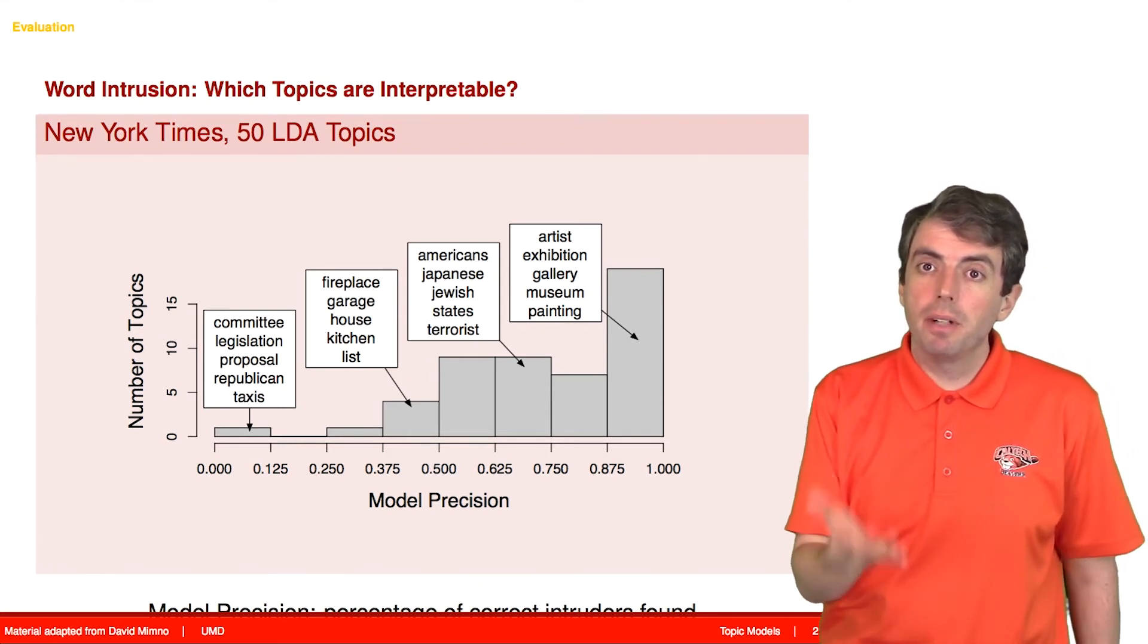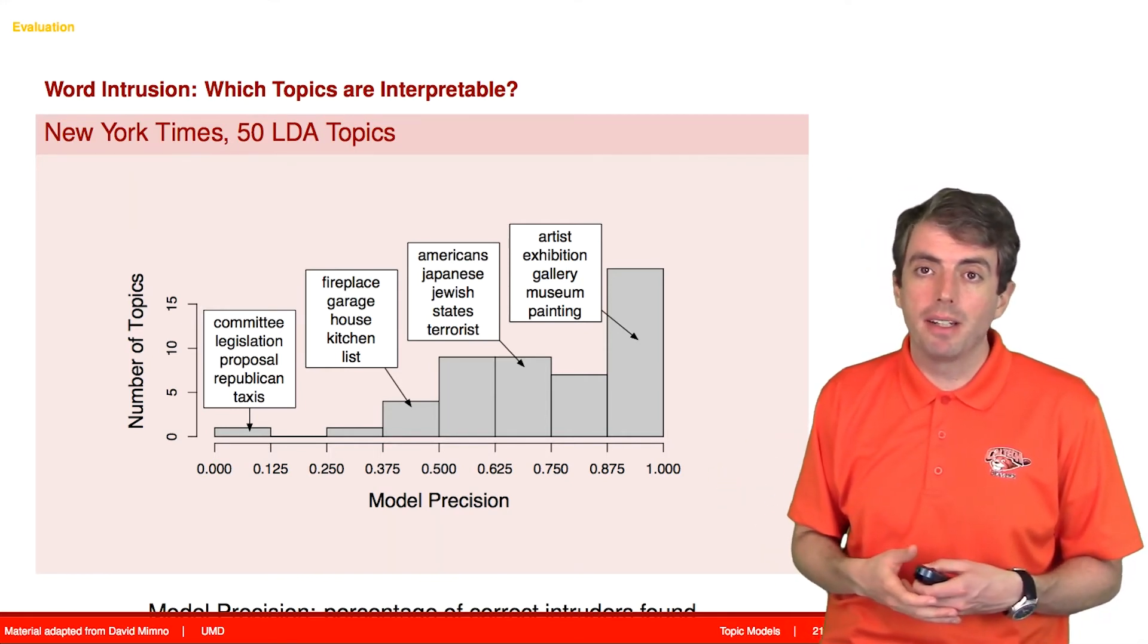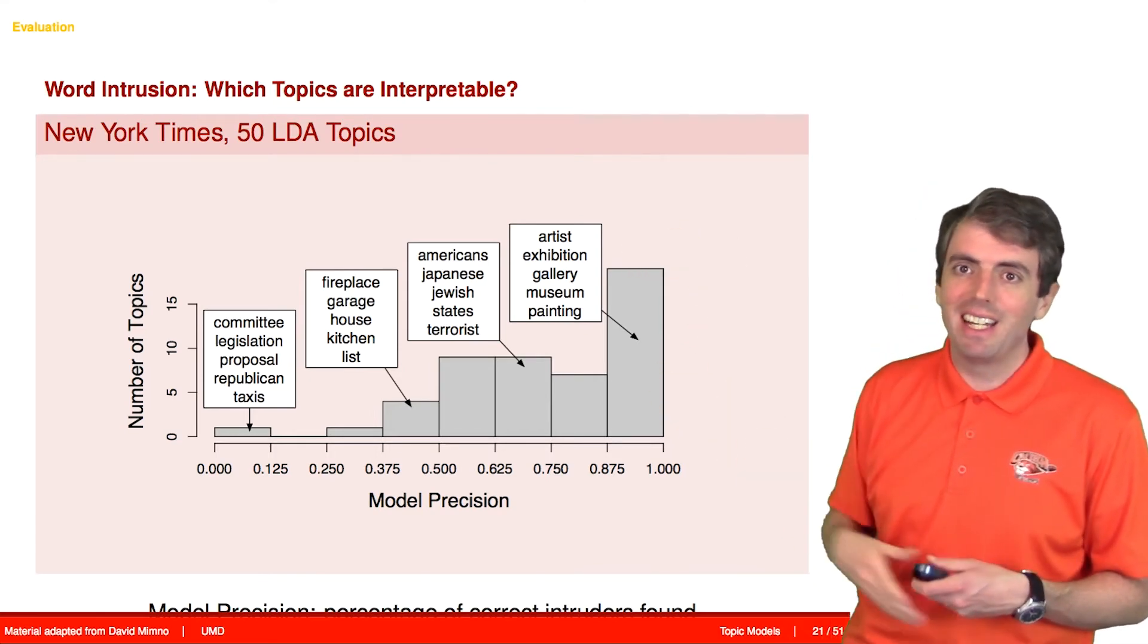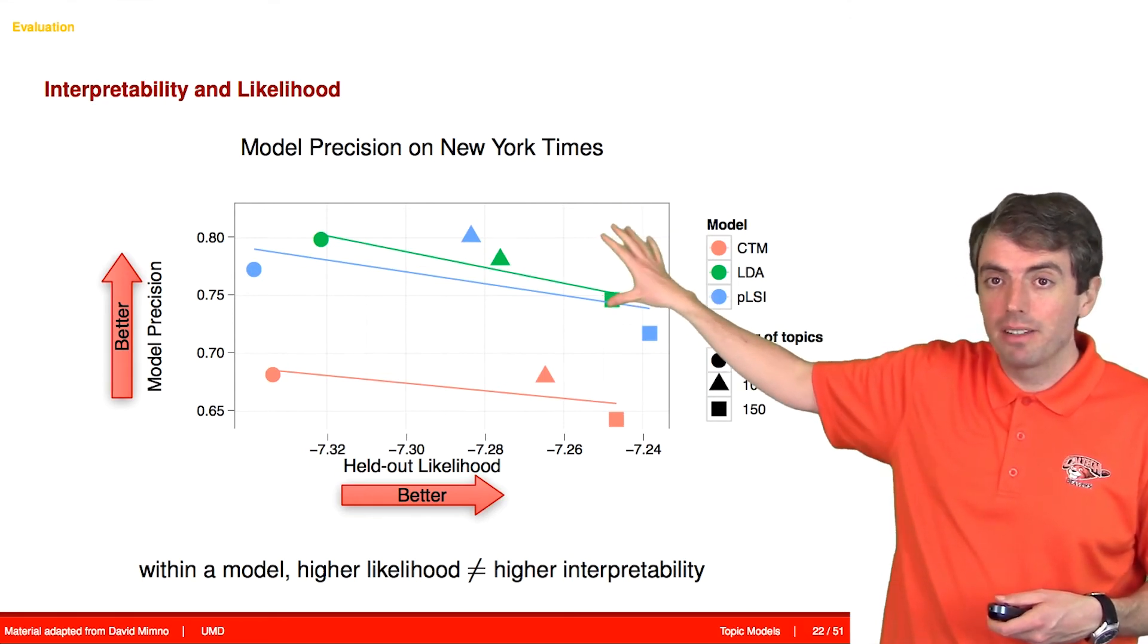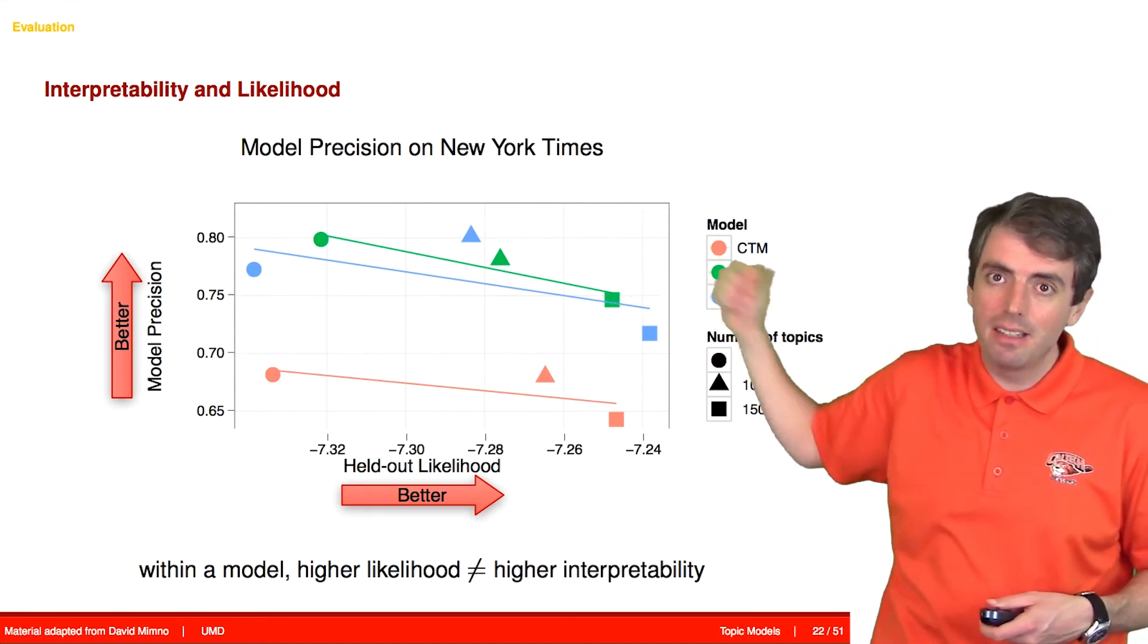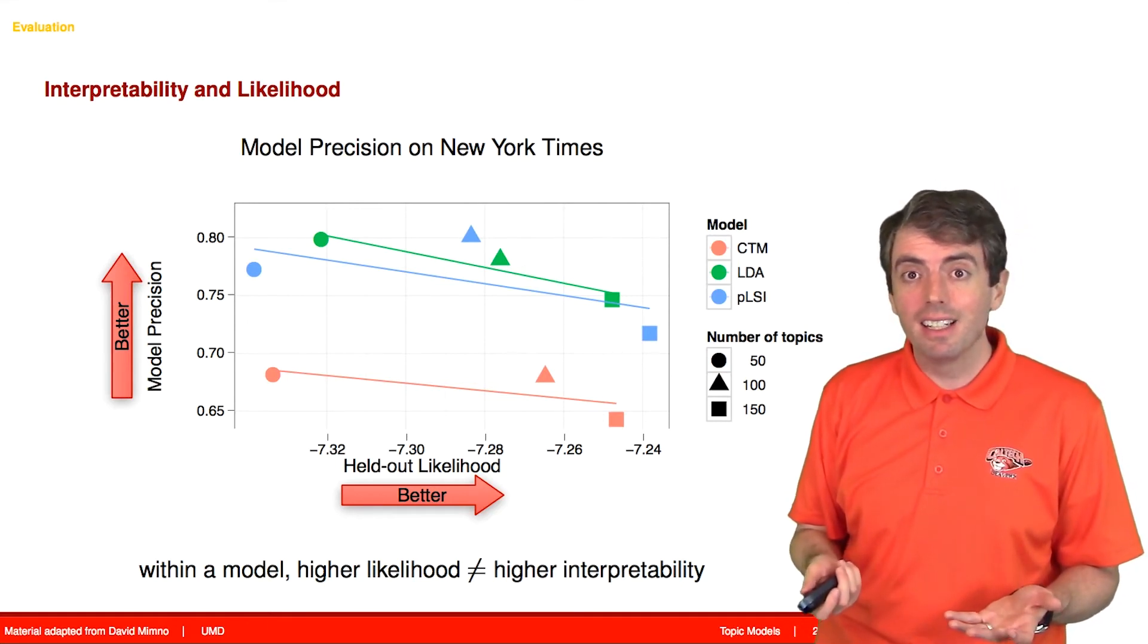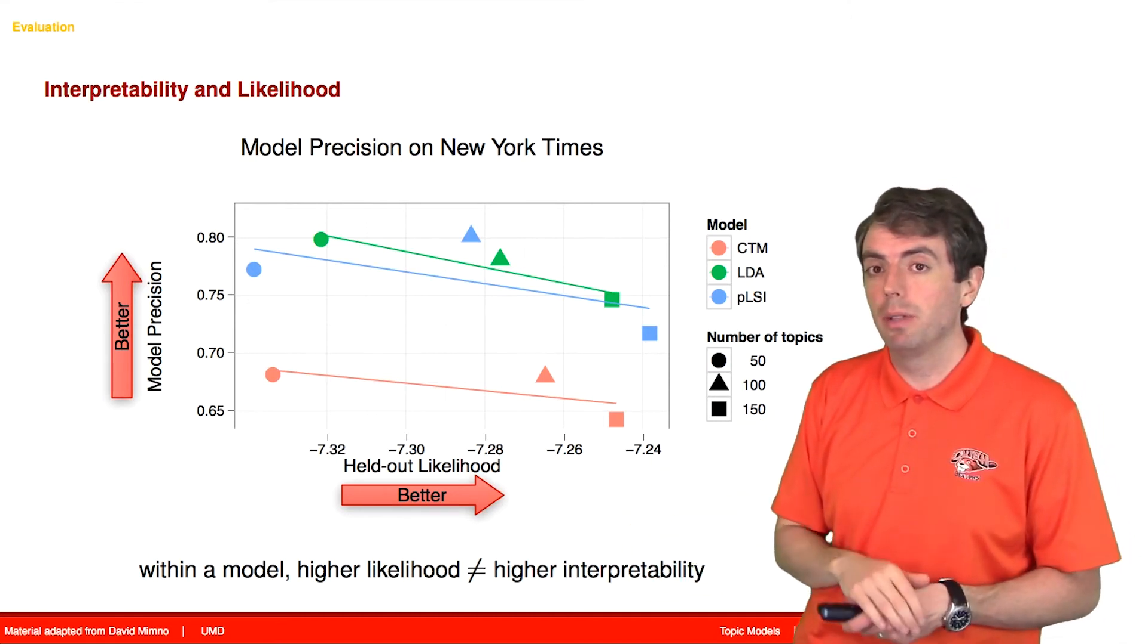And what's surprising is now that we've talked about two different ways of measuring how good a topic model is, you can actually plot the old way of measuring a topic model against this measure of whether the topic makes sense. And they're actually negatively correlated. And this is actually pretty surprising because everyone was using this old statistical technique to measure how good a topic model was.